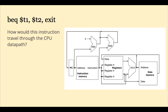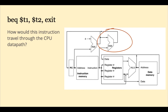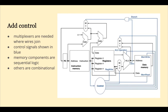Now let's say the next instruction is a branch. The instruction is decoded. The two registers T1 and T2 are read into the ALU. If they're not equal, nothing happens and the PC will be updated by 4 as usual to point to the instruction below the branch. If they are equal, this second adder will calculate the branch target address, and the PC will be updated to point to that location.